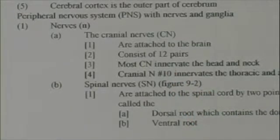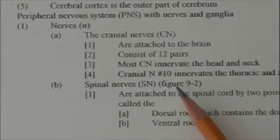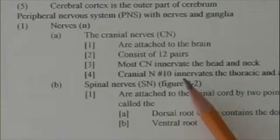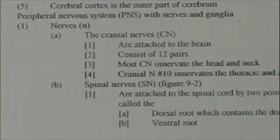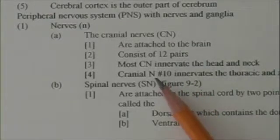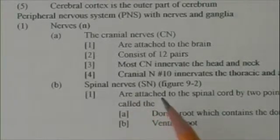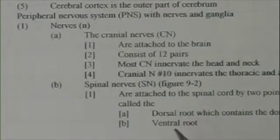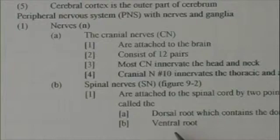The exception is cranial nerve number 10, the vagus. Although I refer to nerves in the singular, they're all paired. This nerve travels down through the thorax and through the diaphragm into the abdomen, innervating various structures in the chest and abdomen. You'll learn much more about the vagus nerve in ANP2. Spinal nerves, on the other hand, are attached to the spinal cord with two points of attachment: a dorsal root and a ventral root.